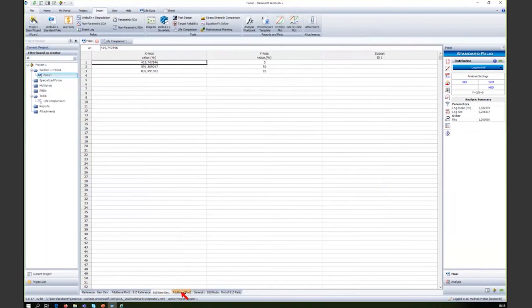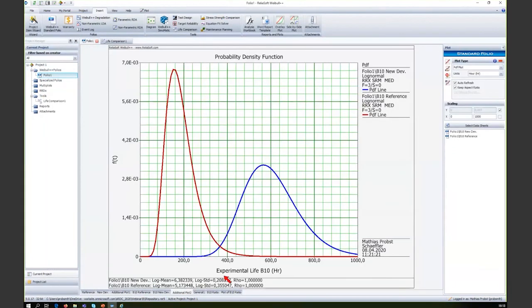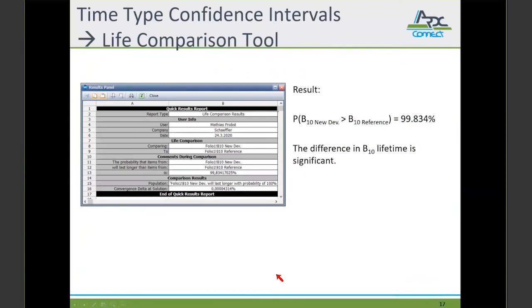The only thing I need to do now is make sure that the log-normal distribution is activated. And I can calculate the parameters, the log mean and the log standard deviation. I have to do the same with the new development data. The three values, the corresponding percent values, log-normal distribution. Calculate it. And now I can display both probability density functions. Important is that the X axis should be renamed. So it's not time anymore. It's experimental life B10 in hours.